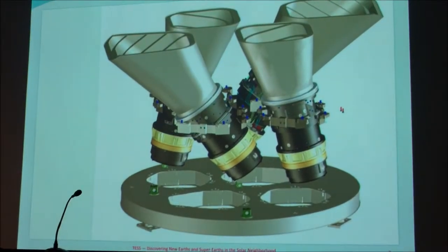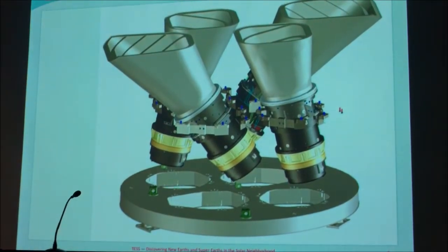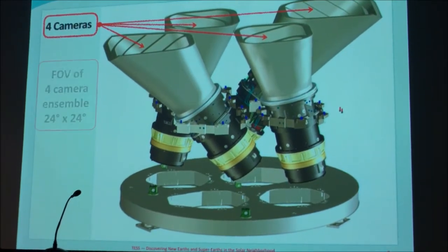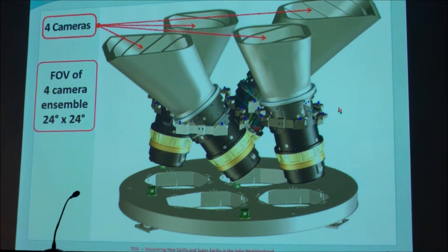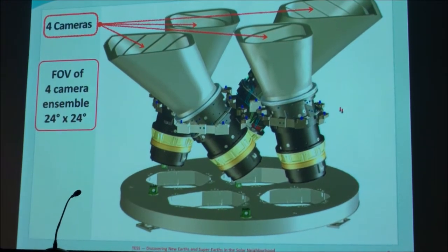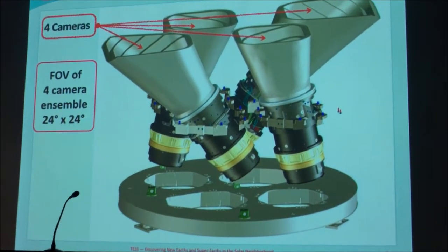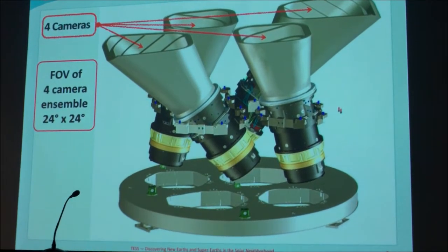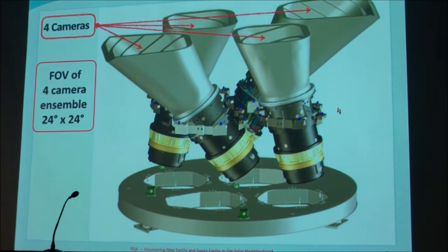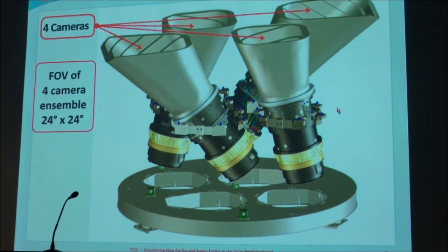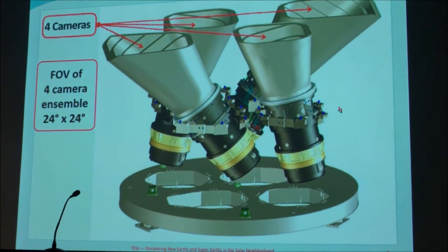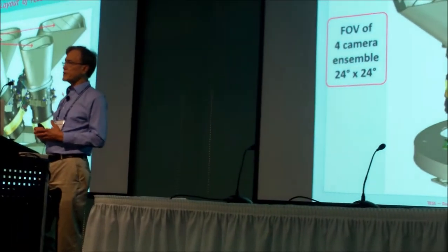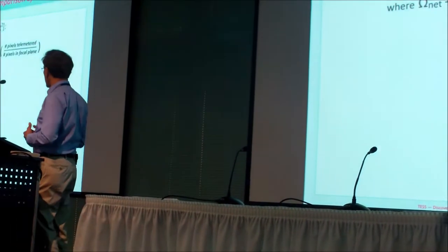There are actually four cameras associated with the mission and they're arranged in this skewed pattern. And the ensemble of these four cameras covers, each one covers 24 degrees by 24 degrees, and there are four of them all together. So the actual ensemble is 24 degrees by 96 degrees. So TESS instantaneously will view about 2300 square degrees of the sky in a single shot.